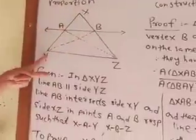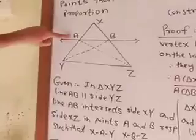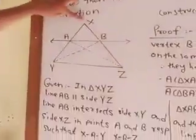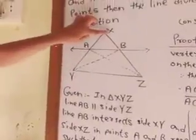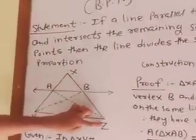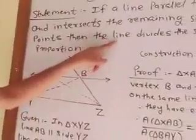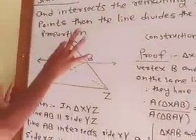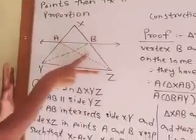Line AB intercepts XY in A and XZ in B, such that X-A-Y (betweenness) and X-B-Z. So the given is established. To prove: XA upon AY equals XB upon BZ — the line divides the sides in the same proportion.